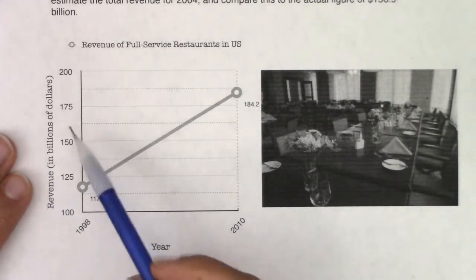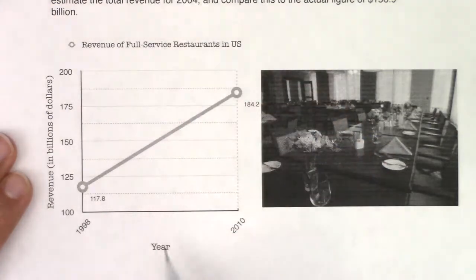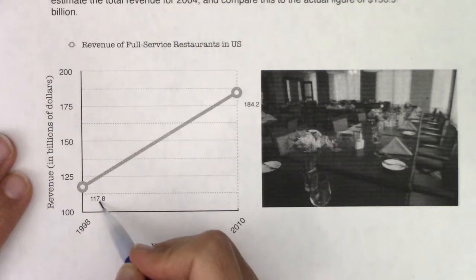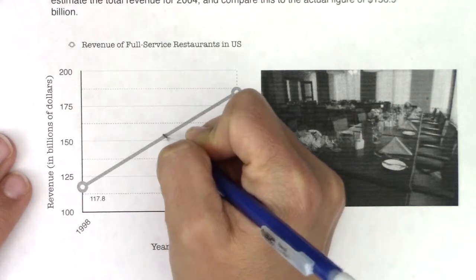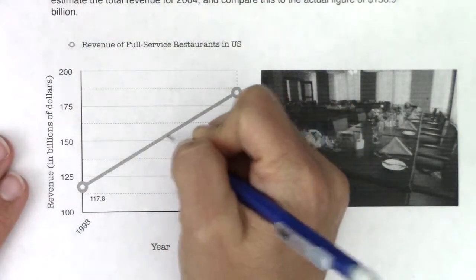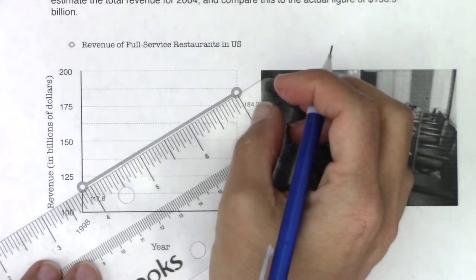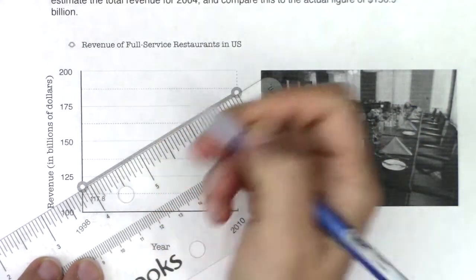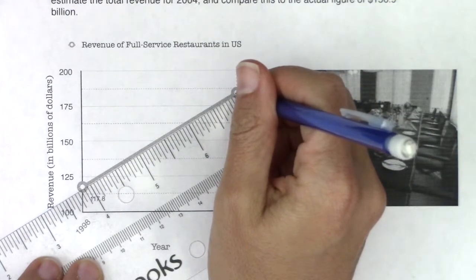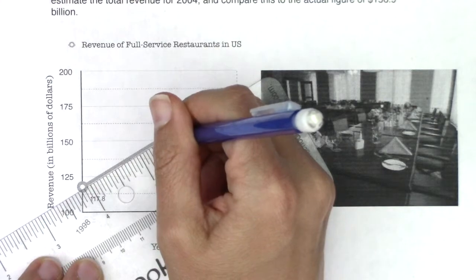I've got revenue in billions of dollars on the y-axis. I've got the year on the x-axis. I see $117.8, $184.2, and basically I want this midpoint in here. So if I was going to try and do the midpoint, I'm going to measure it just to be a little bit more technical. It looks to me it's about three inches long if I measure it.